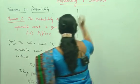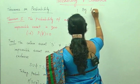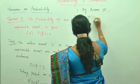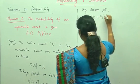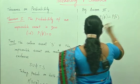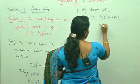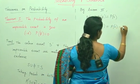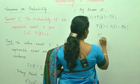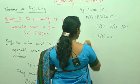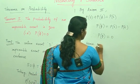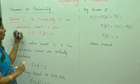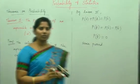Using Axiom 3, we can write P(S) + P(φ) = P(S). When you take P(S) to the other side, you get P(S) - P(S) = 0. Therefore, P(φ) = 0. Hence proved. This is how you find that the probability of an impossible event is 0.